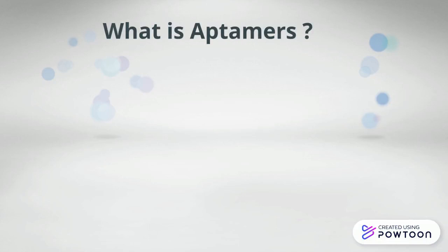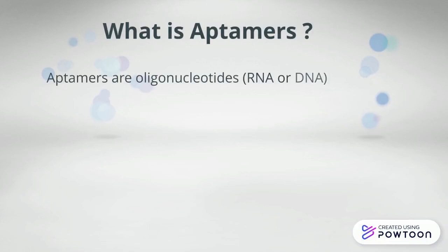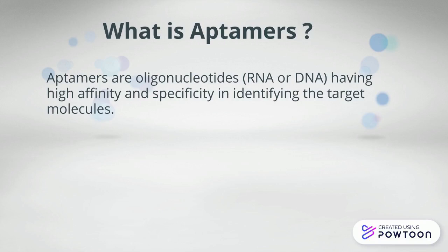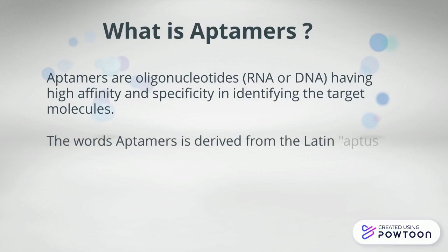What are aptamers? Aptamers are oligonucleotides — RNA or DNA — having high affinity and specificity in identifying target molecules. The word aptamers is derived from the Latin 'aptus' meaning fit, and the Greek 'meros' meaning parts.